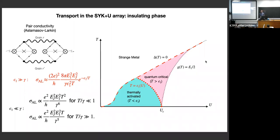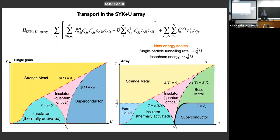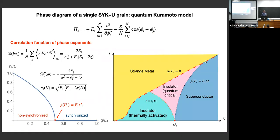On whether the strange metal-insulator boundary in the phase diagram is a real transition or a crossover: at finite temperature it is a crossover, not a true metal-insulator transition. The only real transition is the quantum phase transition at zero temperature. In terms of conductivity or resistivity, there is finite conductivity everywhere at finite temperature, so those are all crossovers.